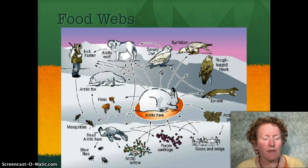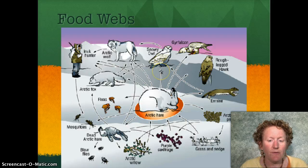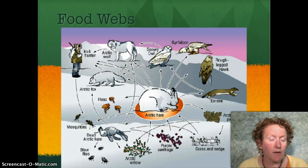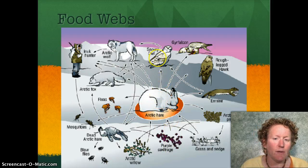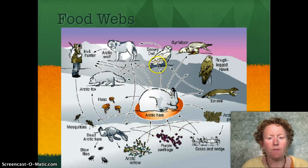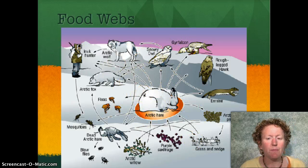Food webs are a little bit more complicated than food chains — they actually include lots of food chains. A food chain, for example, would be the purple saxifrage here, which is a plant. It's eaten by the rabbit, so the energy goes to the rabbit, and then the rabbit gets eaten by the snowy owl. When you connect everything together and put all the food chains together, you get a food web.